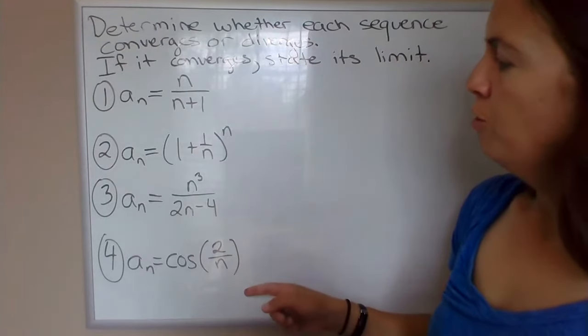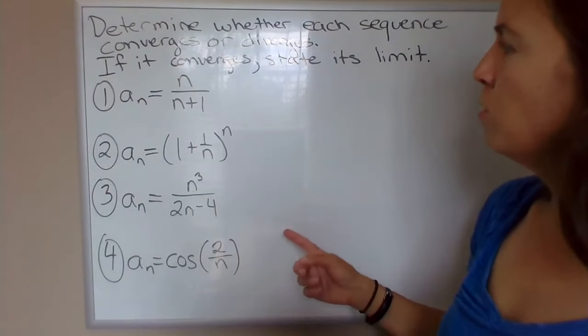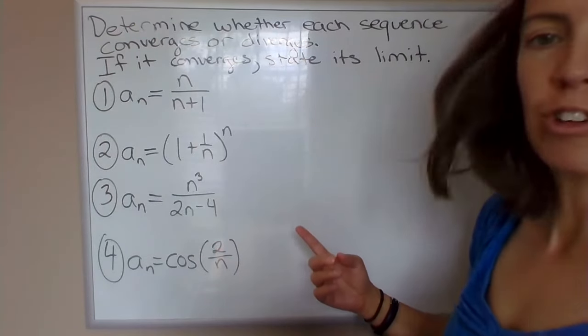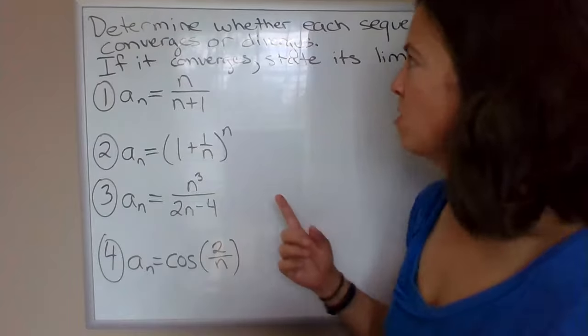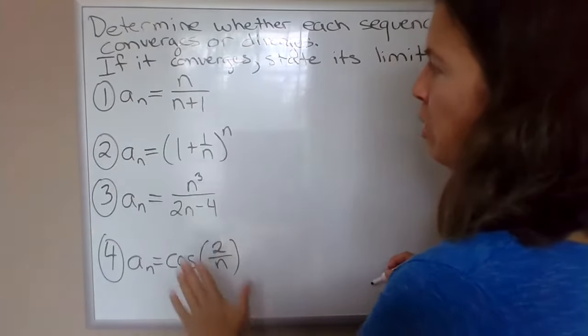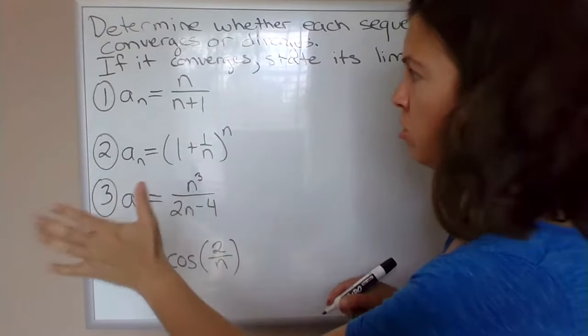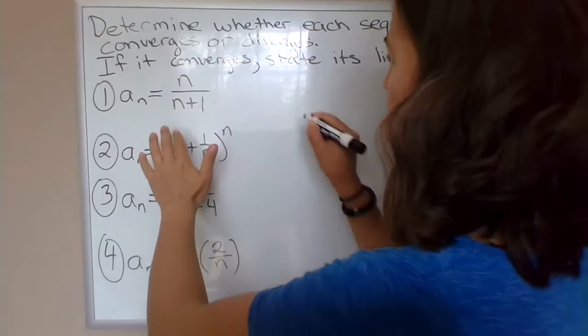I've listed a few different sequences, and the task is to determine whether each sequence converges or diverges. If it converges, we want to state what it converges to. In each of these examples, I'm going to use that sequence extension theorem that I just provided in the notes.